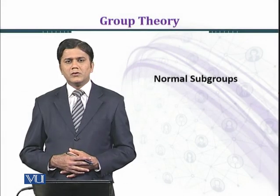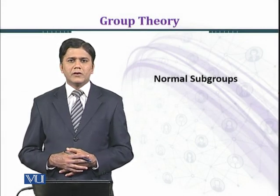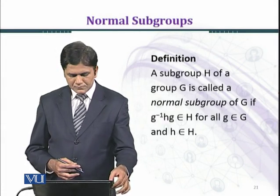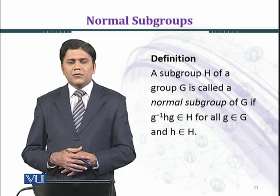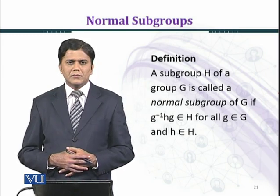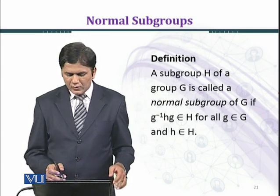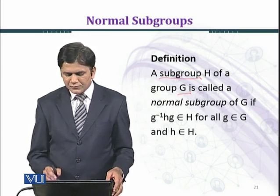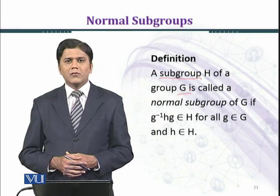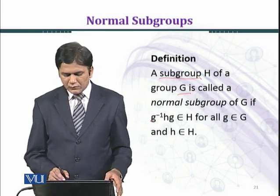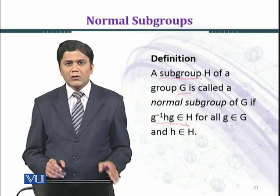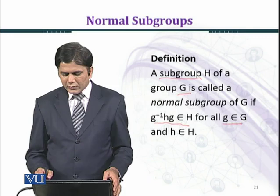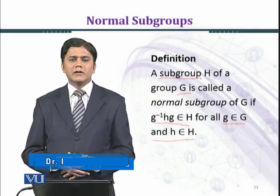In this module, we shall prove an interesting result on normal subgroups. First, we formally define the normal subgroup. A subgroup H of a group G is called a normal subgroup if g⁻¹Hg belongs to H, for all g belonging to G and h belonging to H.